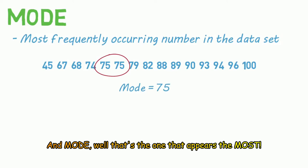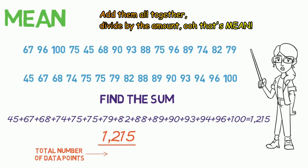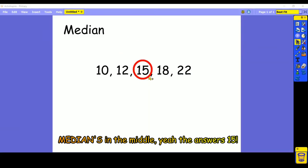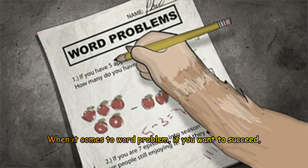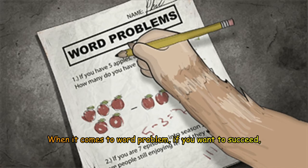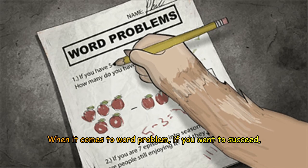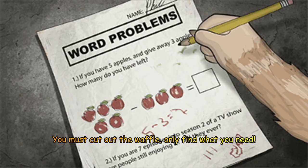There's no doubt you're gonna see mean, median, and mode. A mode — well that's the one that happens the most. Add them all together, divide by the amount — oh, that's mean. Median's in the middle — yeah, the answer's in the middle.